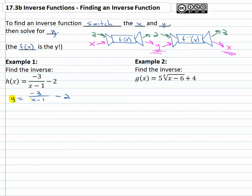And to find the inverse function, we're going to switch the x and y around. So instead of y equals, it's now going to be x equals negative 3 over, instead of x, it's going to be y minus 1 minus 2. And now all we have to do is solve this equation for y to get our solution.